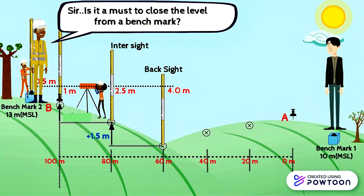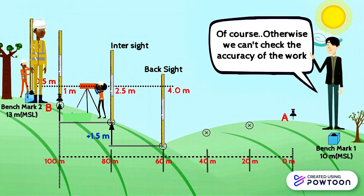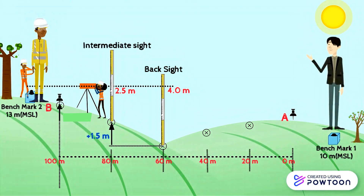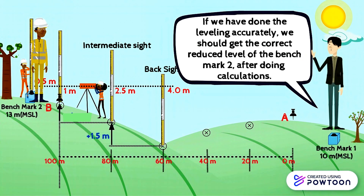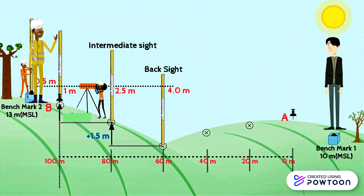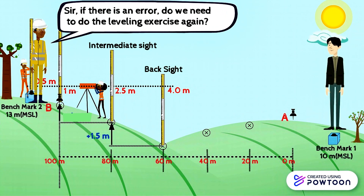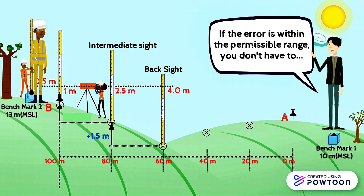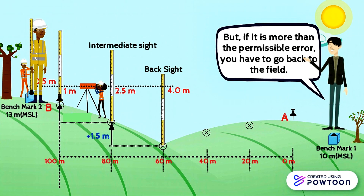Is it a must to close the level line from a benchmark? Of course, otherwise we cannot check the accuracy of the work. If we have done the leveling accurately, we should get the correct reduced level of benchmark 2 after doing calculations. If we fail to obtain the actual reduced level at benchmark 2, the difference between the actual and calculated reduced level is the error. If the error is within the permissible range, you don't have to redo the work, but if it is more than the permissible error, you have to go back to the field.